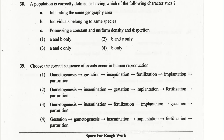The correct sequence of events in human reproduction: gametogenesis, insemination, fertilization, implantation, gestation, parturition. The third option is the right answer for question 39 because it has all steps in the proper sequence, ending with parturition — giving birth.